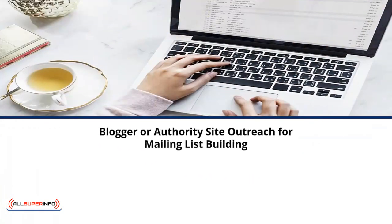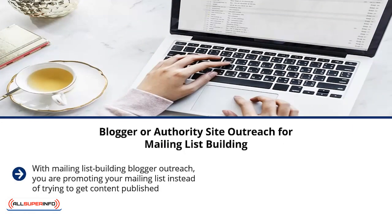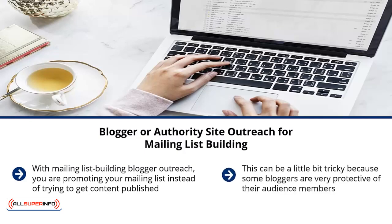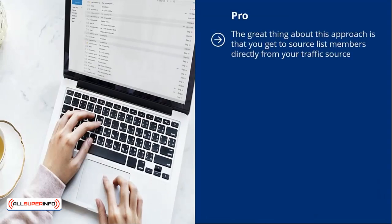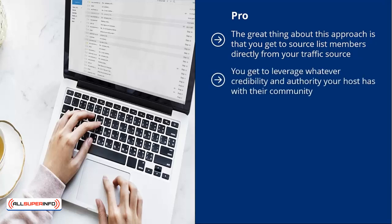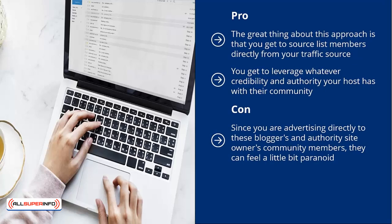Blogger or authority site outreach for mailing list building: with this approach, you are promoting your mailing list instead of trying to get content published. You're paying bloggers to put your mailing list code on the content they publish. This can be tricky because some bloggers are very protective of their audience members while others are insecure or paranoid, so sharpen your negotiation skills. Pro: you get to source list members directly from your traffic source with no middle transition, leveraging whatever credibility and authority your host has with their community, which can lead to higher conversion rates. Con: community members can feel a little paranoid, and bloggers will usually increase the amount of money they're asking for.